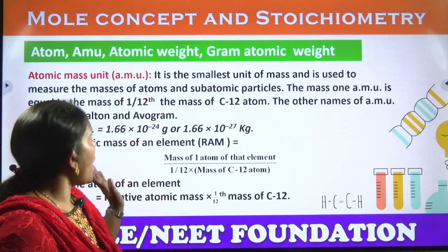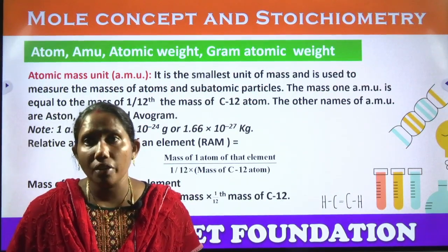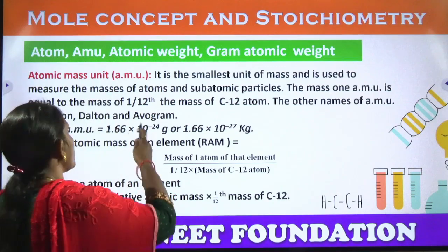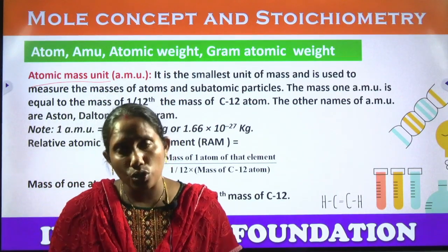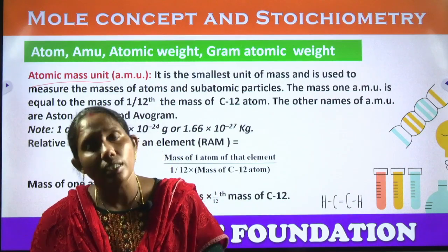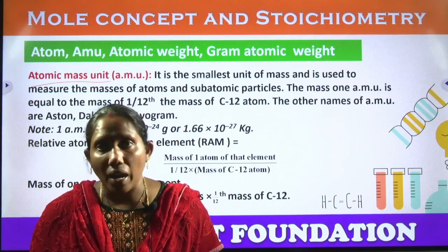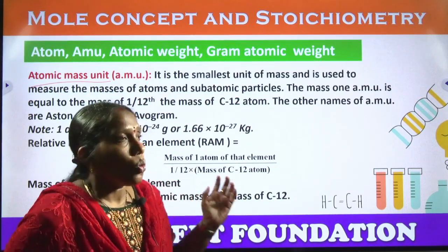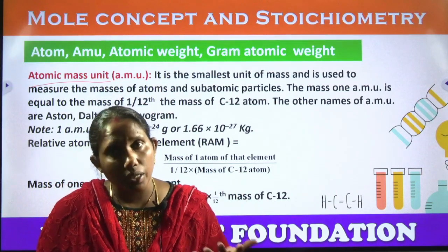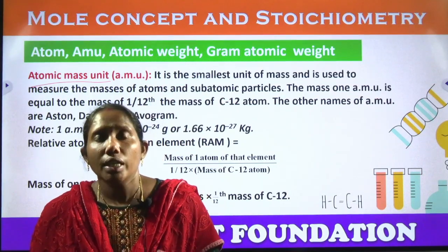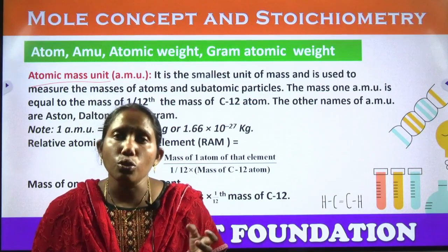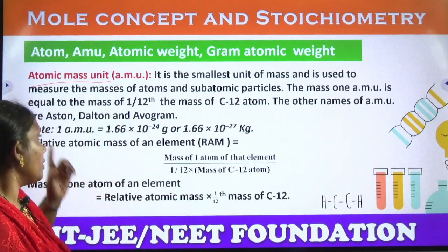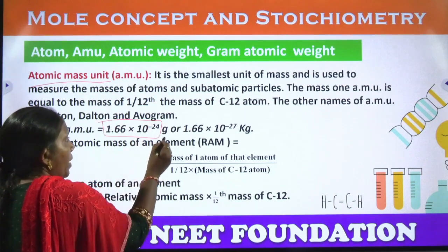First, what is atomic mass unit — AMU means atomic mass unit. This atomic mass unit is the unit used to measure the smallest particles like atoms or subatomic particles. To measure their weight, we use the atomic mass unit. One atomic mass unit equals 1.66 × 10⁻²⁴ grams.